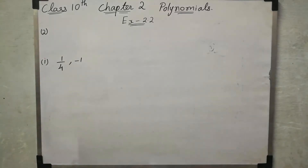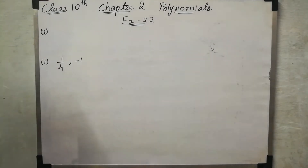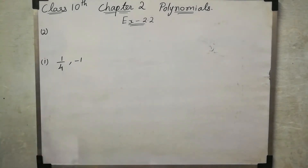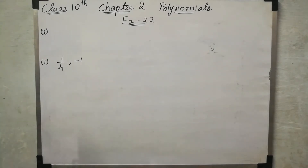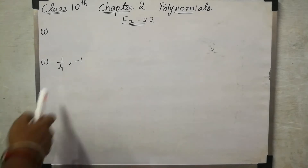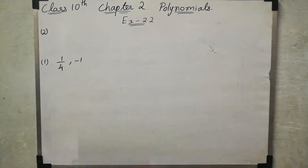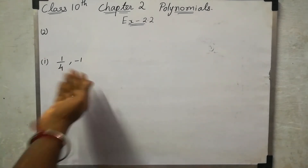Hi students, we will talk about the topic of polynomials, exercise number 2.2, second sum, first subdivision. The problem gives us the values for the sum of zeros and product of zeros. Find the quadratic polynomial for each of which the given numbers are the sum and product of its zeros, respectively.